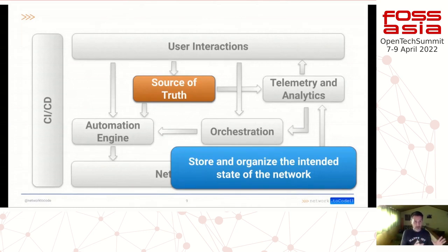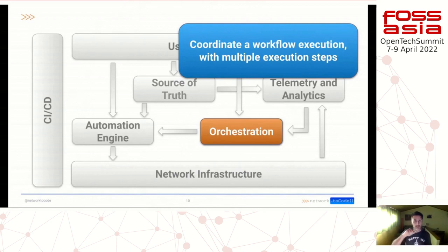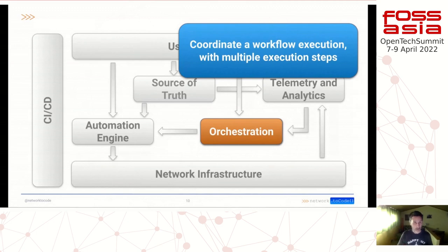When we have the source of truth, because we are automating a process, there should be an orchestrator — a workflow orchestration layer somewhere. The functionality of orchestration is nothing more than coordinating the multiple steps of execution. There may be multiple steps that have to be executed in order to fulfill a solution. We are going to see in an example how this fits together.